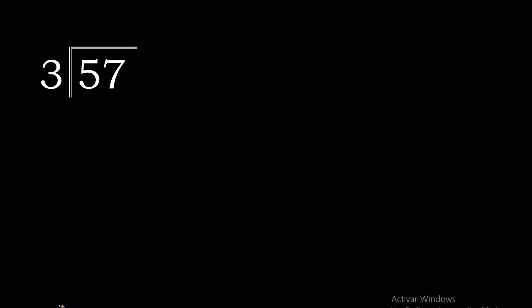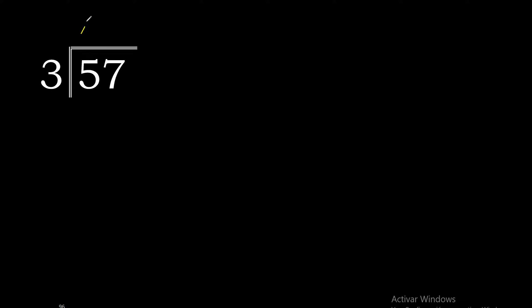57 divided by 3. 5 is not less than 3, so we work with 5. 3 multiplied by 2 is 6 — excessive. 3 multiplied by 1 is 3 — that is the closest. 5 minus 3 is 2, so the remainder is 2.